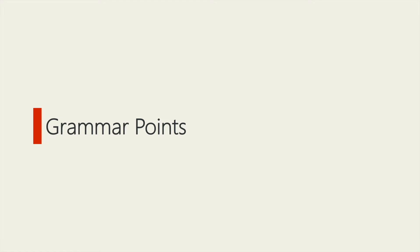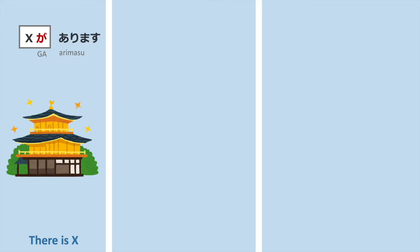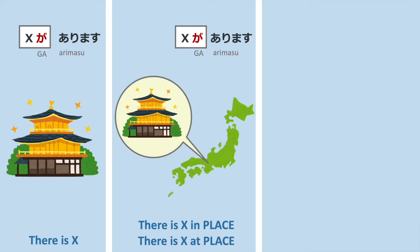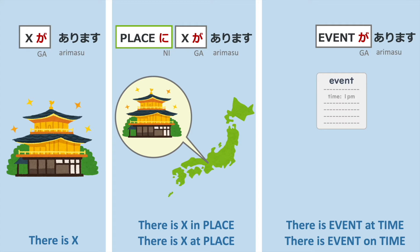Let's look at the grammar points. In the first video of this lesson series, we learned エックスがあります — 'there is X.' In the second video, we learned how to say something exists in a certain place by using the に particle: Place に エックスがあります。 In this video, we focus on telling the existence of events and what time the event occurs — we use the に particle again.